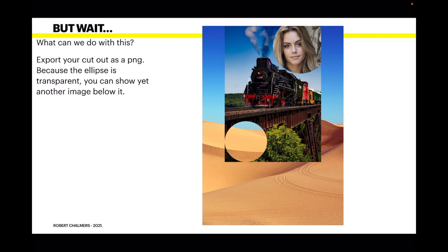Now I've saved the original image as a PNG file. Remember those cutouts in PNGs stay transparent — export your cutout as a PNG. Because the ellipse is transparent, you can show yet another image below it. I've created another image and placed my exported PNG over the top of it, and there's a sand dune in the circle behind the train image — the girl is there, the train is there, and the sand dunes are behind it.